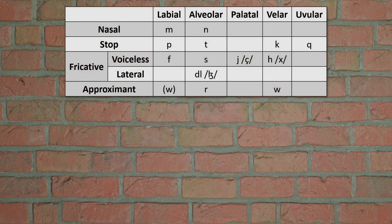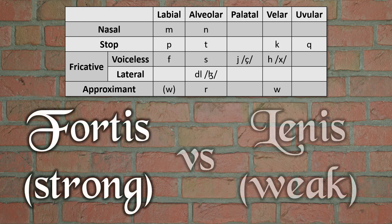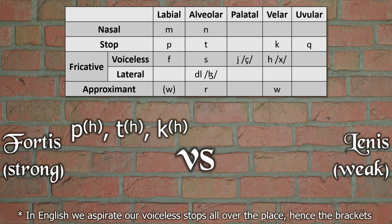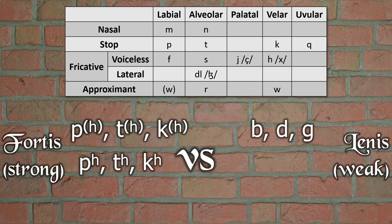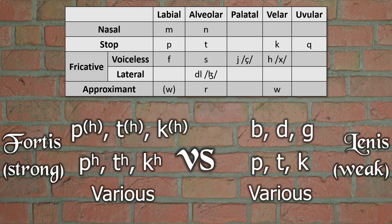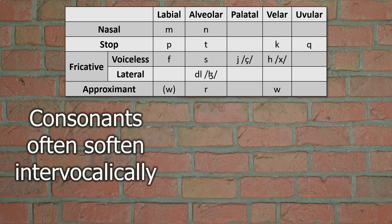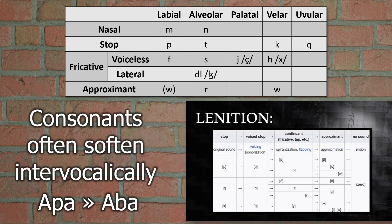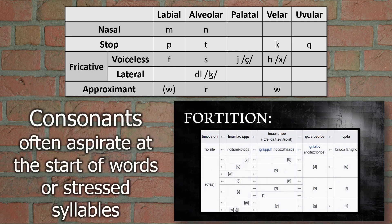Moving over to consonants, it's common for a language to have some distinction between fortis and lenis consonants, especially in stops. Fortis-lenis distinctions can come in various different ways. In English we have the fortis P, T, K and lenis B, D, G. In Mandarin there's the fortis P, T, K and lenis P, T, K. These distinctions can come in various other ways too, like glottalisation, velarisation, length, etc. Voiced stops, for example, often come intervocalically — that is, between vowels — like /apa/ becoming /abba/. That's lenition: the consonant's getting weaker. In contrast, aspiration would come from fortition, which often comes at the beginning of words and in stressed syllables.